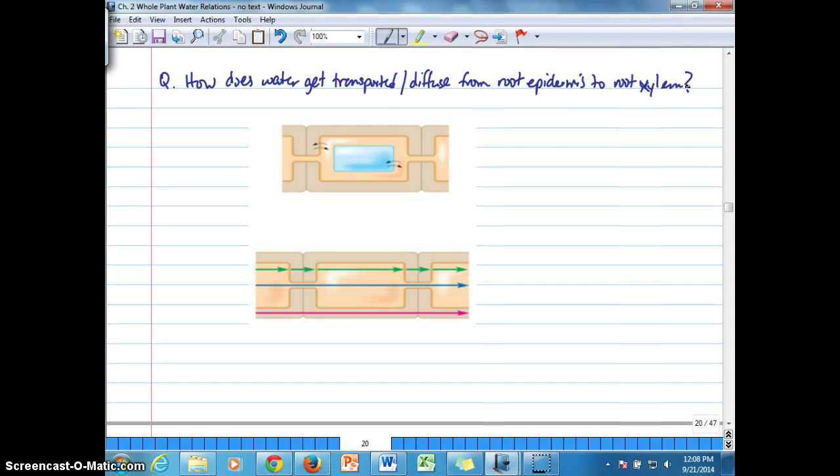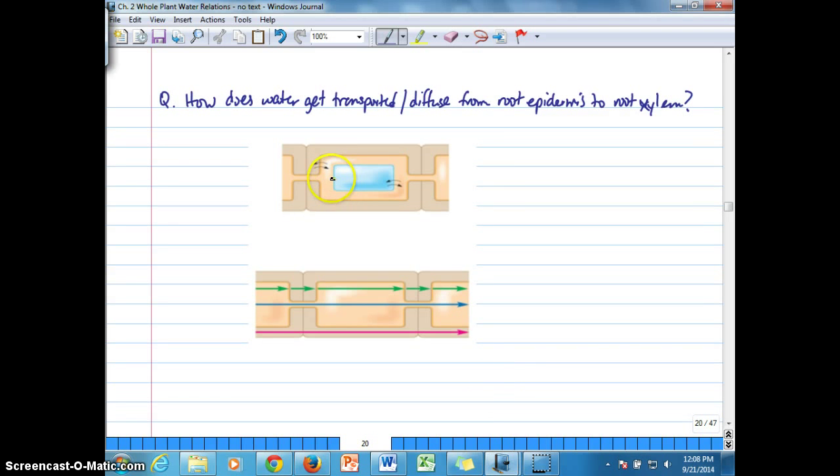We looked at this diagram in the past when we were looking at basic plant anatomy where we defined the symplast, where the cytoplasm streams from one cell to the next through plasmodesmata, versus the apoplast which contains the cell wall and middle lamellae.